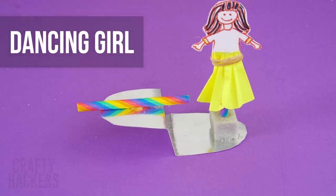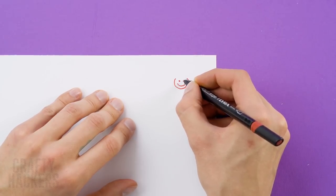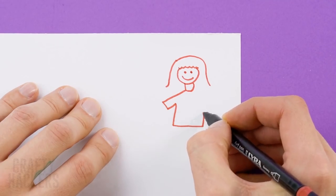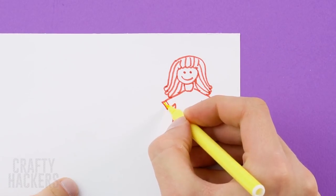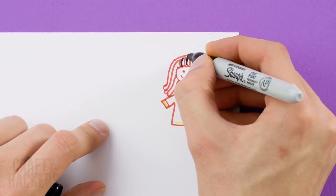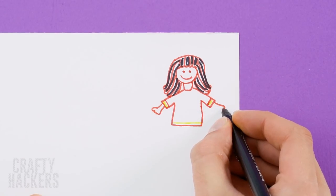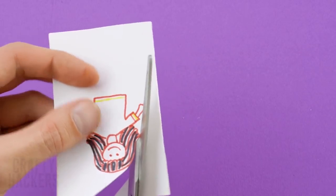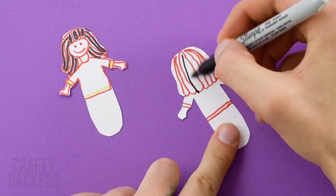Dancing girl! Here's a fun activity to do with your friends. Let's draw a picture of a girl on a piece of paper. You only need to draw the top half. Then cut the drawing out. Be sure to fold it in half first. Keep some extra paper at the bottom and cut it into a U shape.